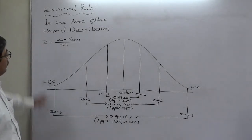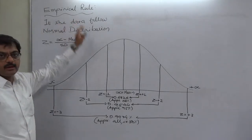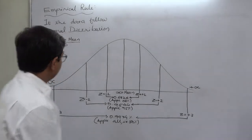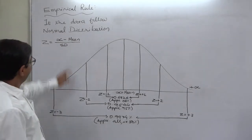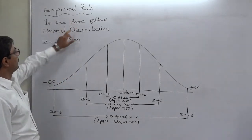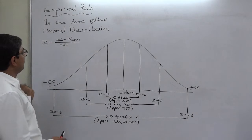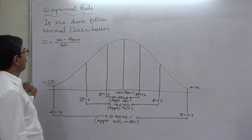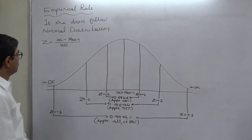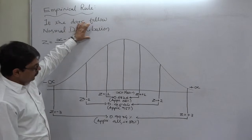Let us take a new topic that is known as the empirical rule. The empirical rule is applicable to data only if the data follow a normal distribution.